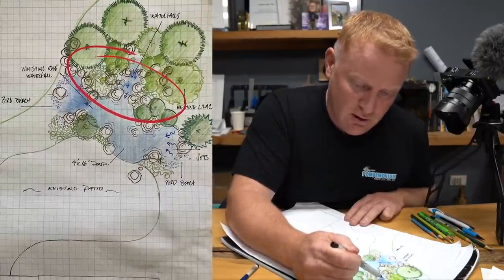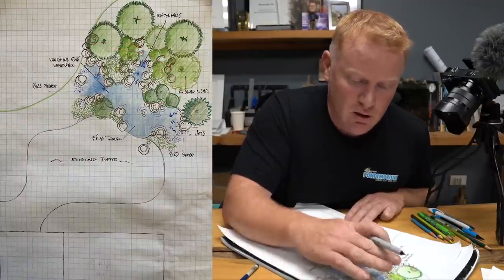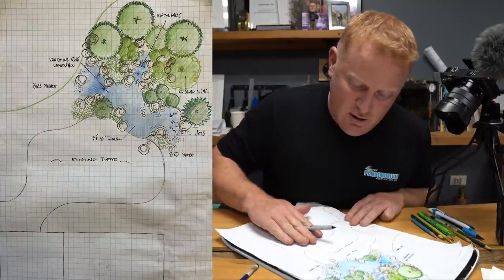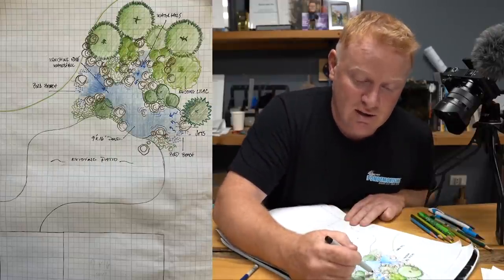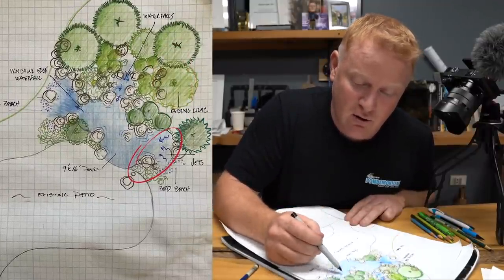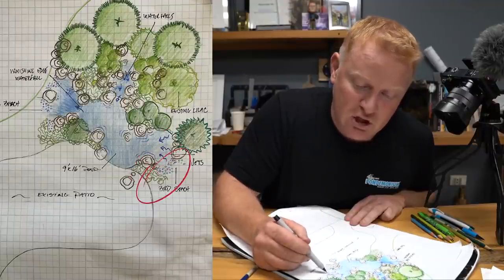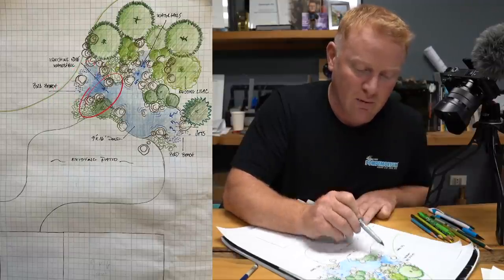All right, so just about finished. We've got the house. We have the existing patio. I've colored everything in. Here's the waterfalls illustrated by little blue arrows that come down in between some existing boulders. Big plant backdrop in here to really frame that waterfall. When you look this way across the patio from inside the house, this creates a wall, which creates a room, which then makes these waterfalls feel that much bigger. Here's some jets pushing water. Here's that bird beach area. We've got our 9 by 16 foot pond and that vanishing edge waterfall coming down this way.